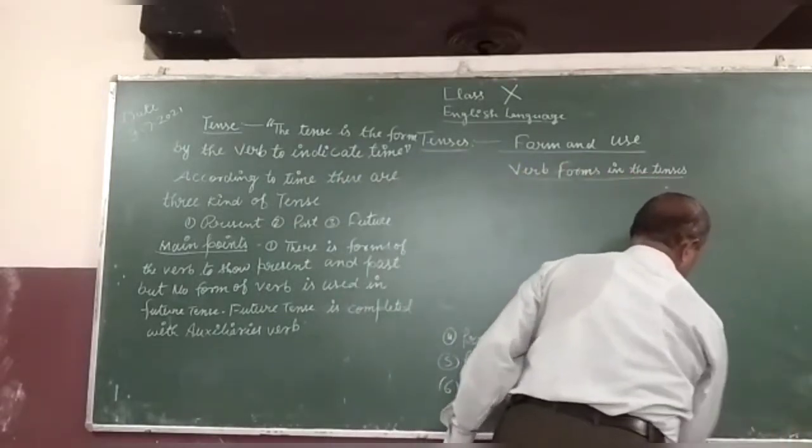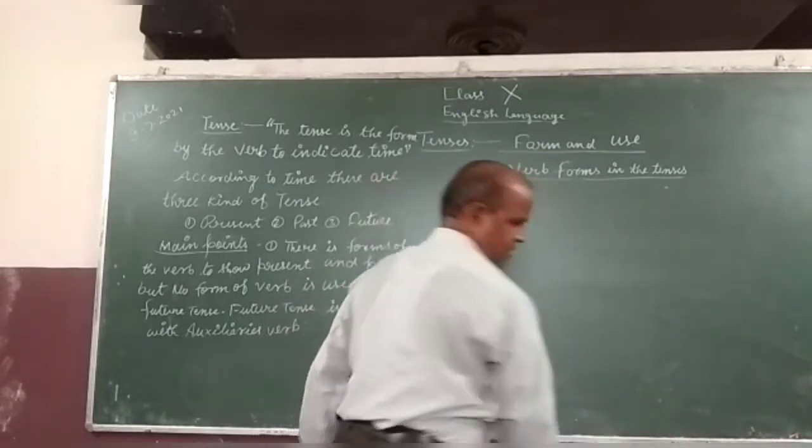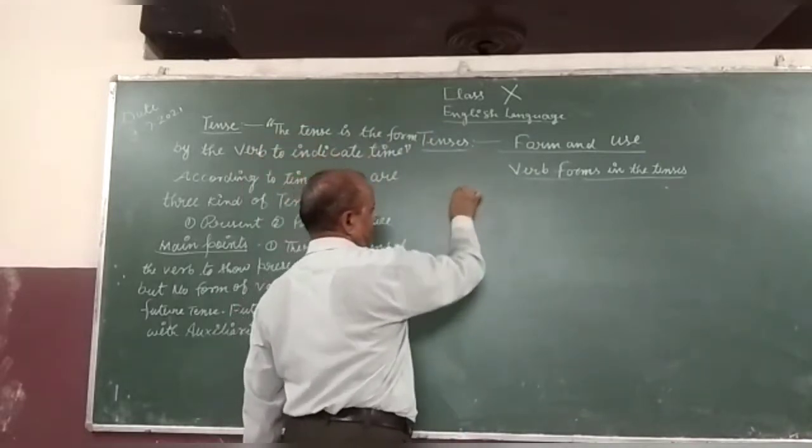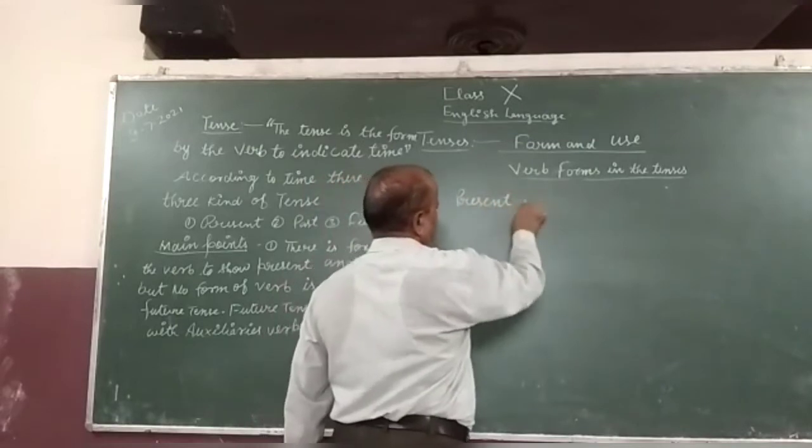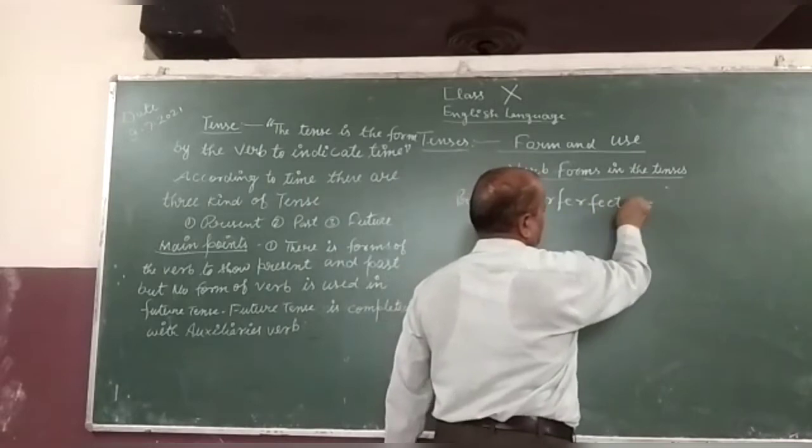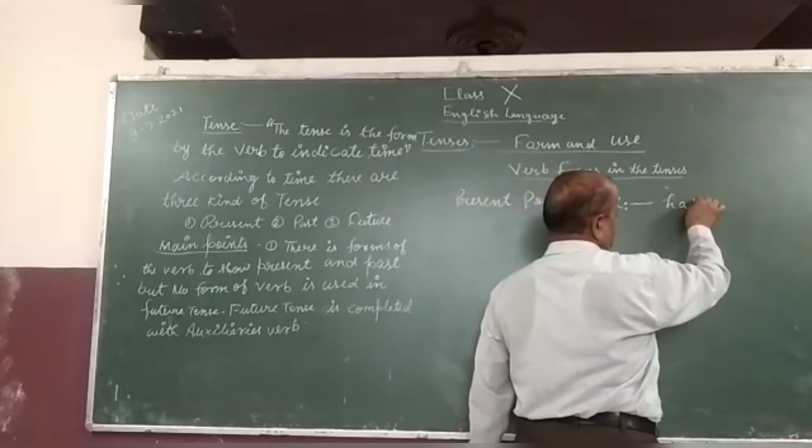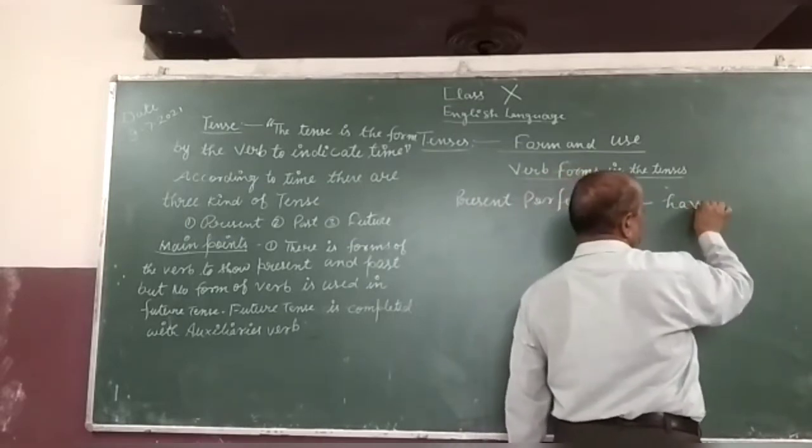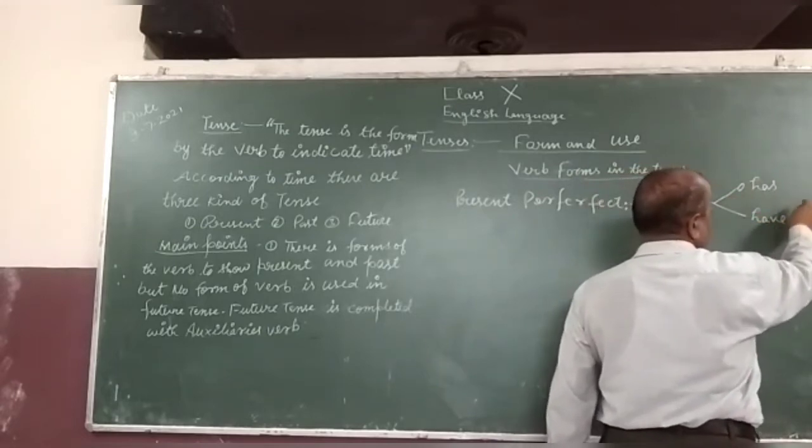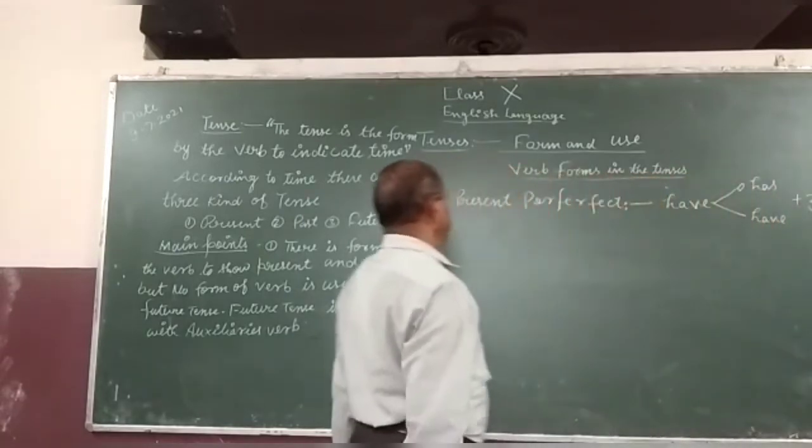This came on perfect. Present perfect: we are going to be have or has, have or has, plus third form of the verb will be using present perfect.